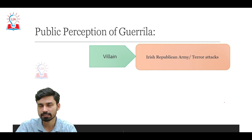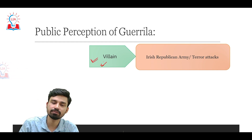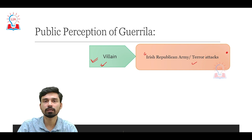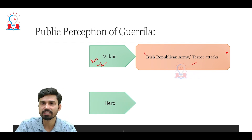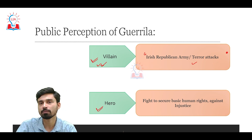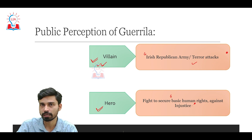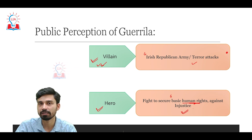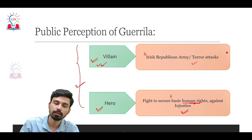Due to diverse examples where guerrilla warfare has been adopted, guerrilla fighters are sometimes considered villains and sometimes heroes of the local people. For example, when the Irish Republican Army carried out terror attacks and guerrilla warfare against the British, it was considered villainous because many innocent civilians were killed as collateral damage. On the other hand, fighters like Che Guevara and Fidel Castro in South America are considered heroes because people believe they were fighting for a just cause — securing basic human rights and fighting against the injustice of an existing government.